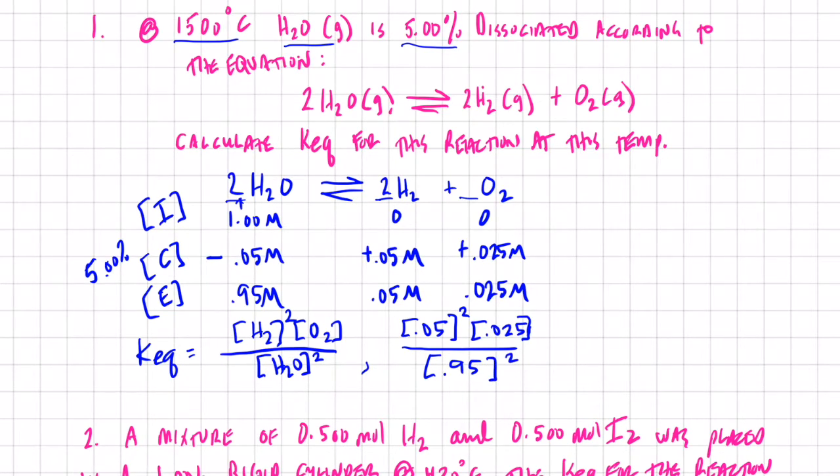So we'll go to our calculator folks, and we'll calculate our equilibrium constant. We have 0.05 squared times 0.025 divided by, let me use my parentheses key here kiddos, 0.95 carat key squared, close parentheses, and I end up with 6.9 times 10 to the negative 5th would be the equilibrium constant for that reaction.